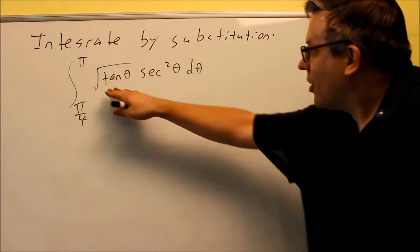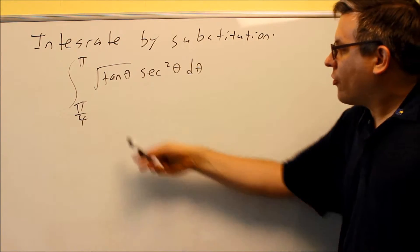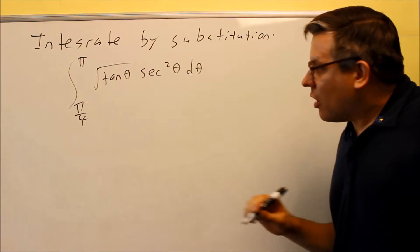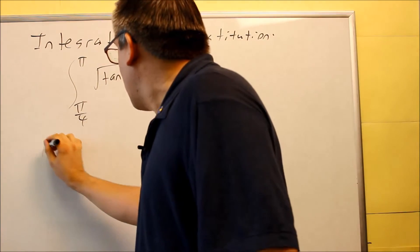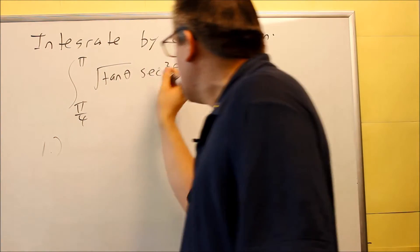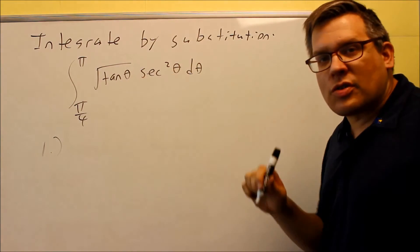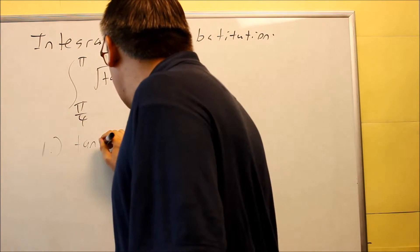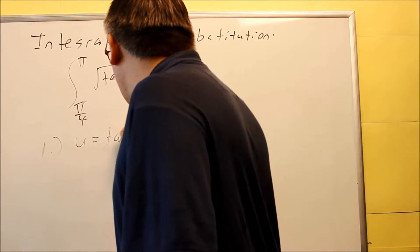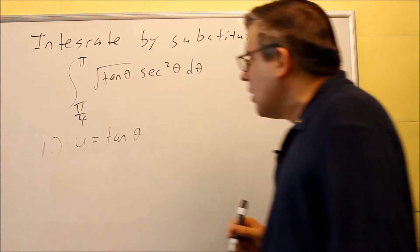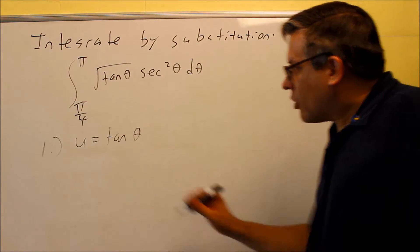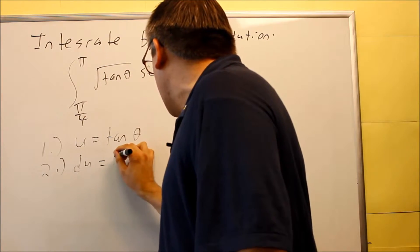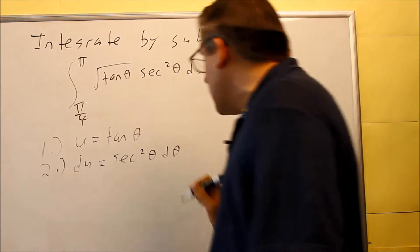We've got more trig — another one that involves trig, from pi over 4 to pi. The first thing we do again is our substitution steps. You want to pick your u — the u is inside of something else, so we're going to pick the tangent because it's inside of something else. We say u equals tangent theta. Then we take the derivative of both sides: du equals secant squared theta d theta.